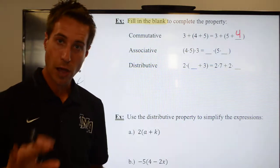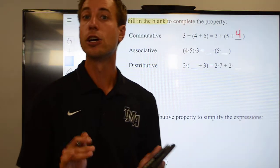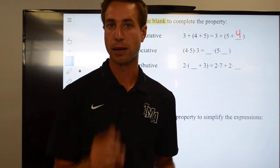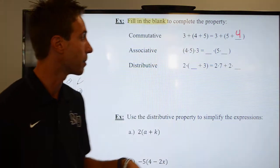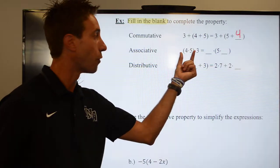The next one is the associative property. Remember, the associative property has to do with the grouping. The associative property says grouping does not matter when it comes to addition and multiplication. So let's go ahead and take a look at this problem, see if we can fill in the blanks. What I've done is I've grouped together the 4 and the 5, and then I'm multiplying by 3 on the outside.